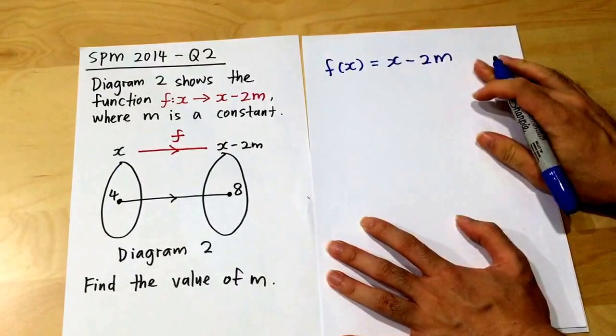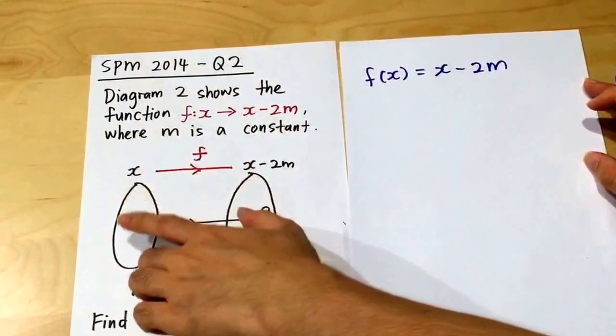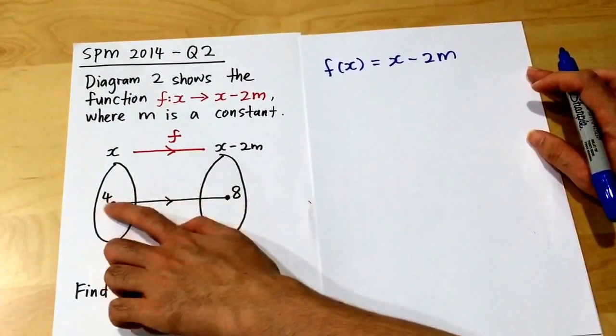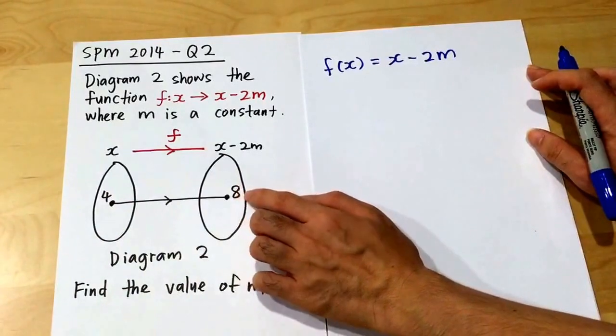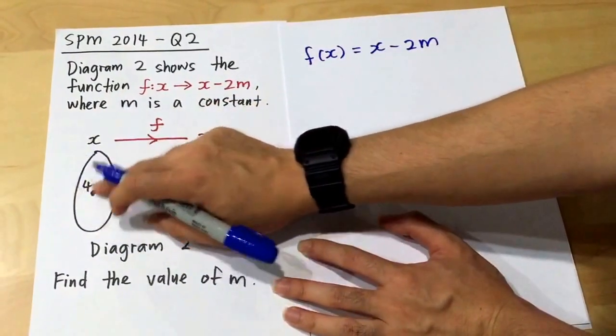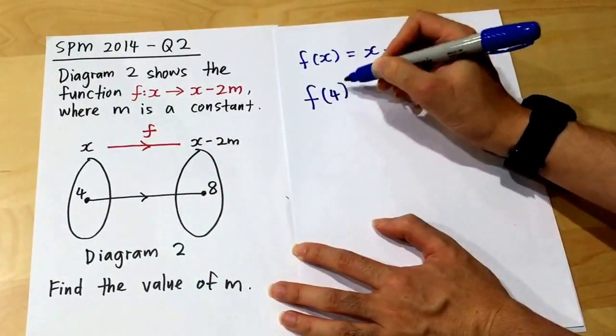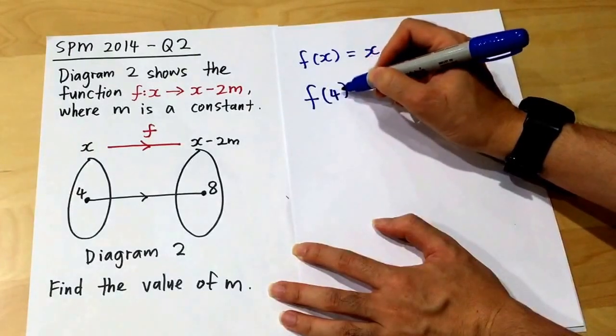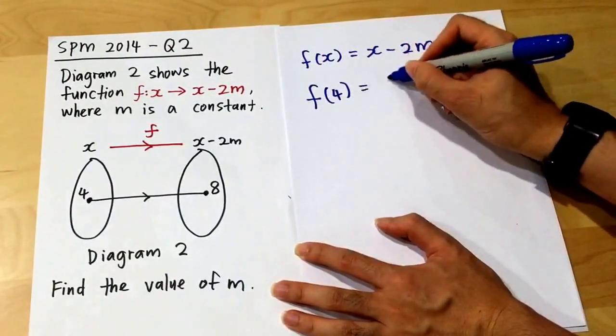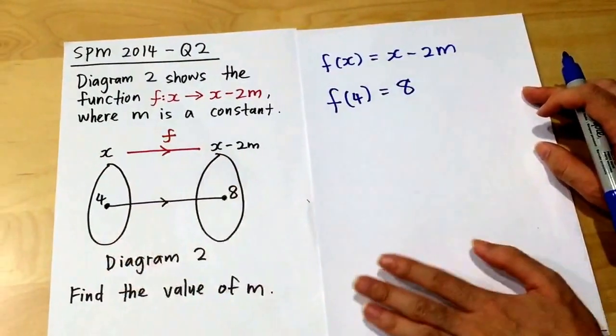In order to find m, I need one information. You have to understand the purpose of 4 and 8. 4 is the object, 8 is the image. This is my x value. When my function f has the object as 4, when my x is 4, the whole function will give me the value of 8. This is what the question is trying to tell you.